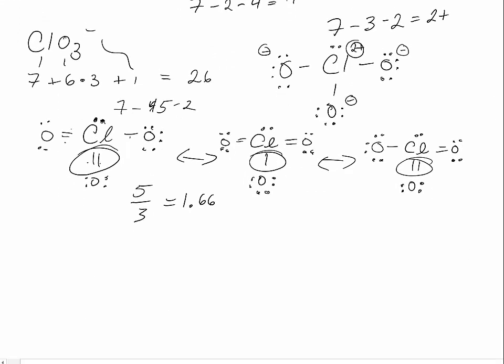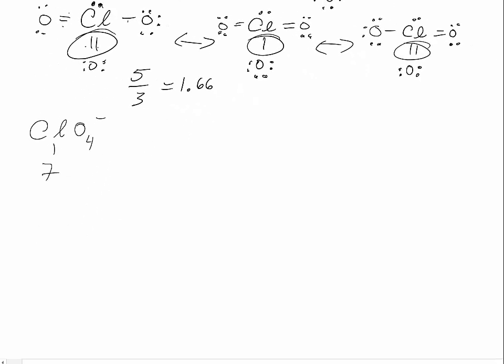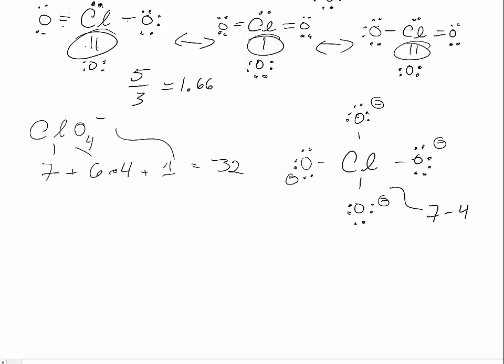What do you think the bond order will be in perchlorate? Still seven electrons for the chlorine, six times four for the oxygen plus one for the charge, equals 32 electrons. We've got 32 electrons shown. The problem is that right now each of those oxygens has a negative formal charge. What's the formal charge on the chlorine? The formal charge on the chlorine is seven minus four with no lone pairs, so three plus.